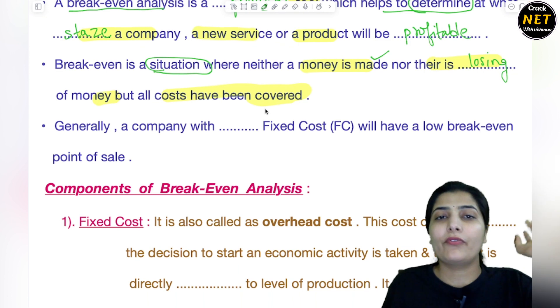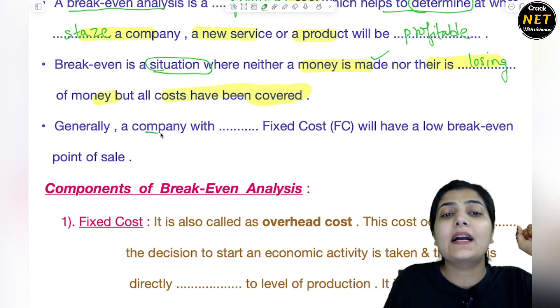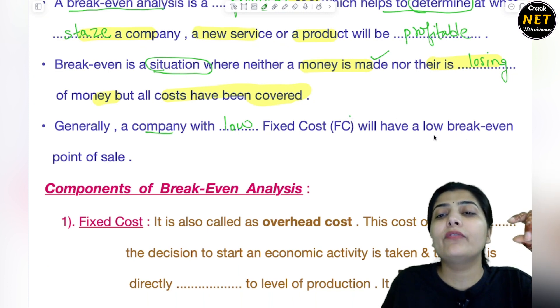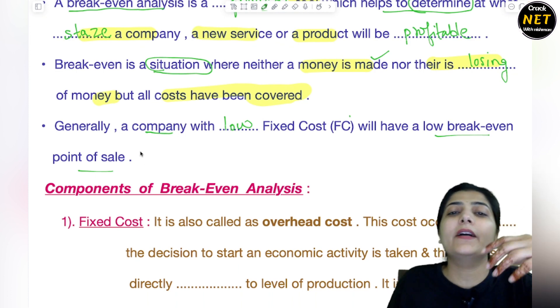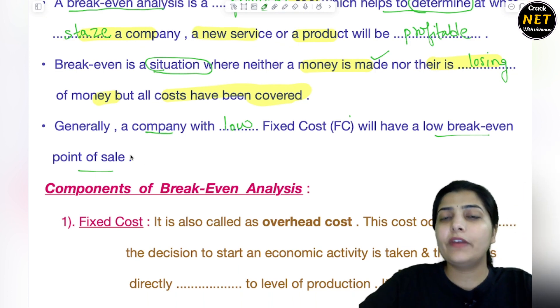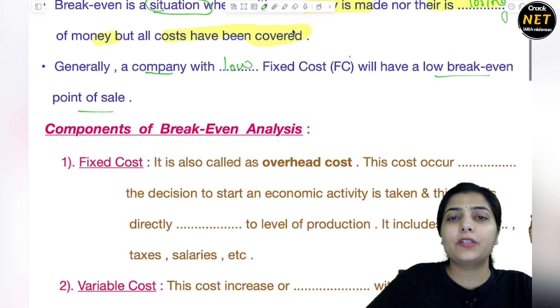Generally, a company with low fixed cost will have a low break-even point of sale. Low fixed cost implies low break-even point of sale for a company.